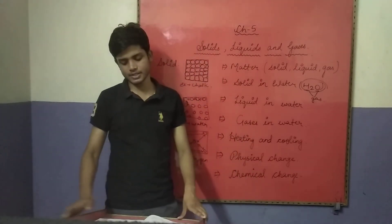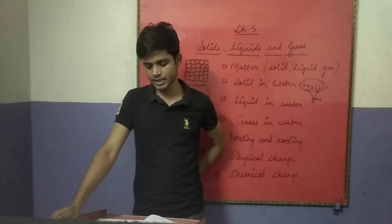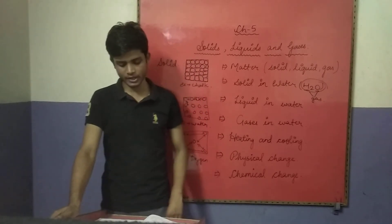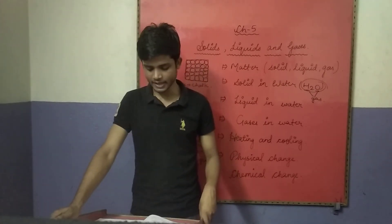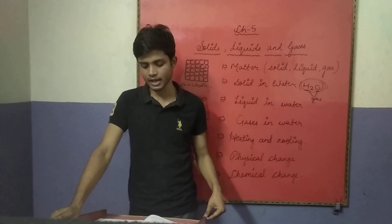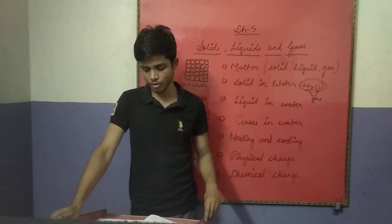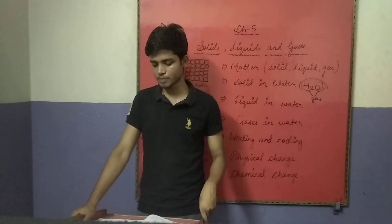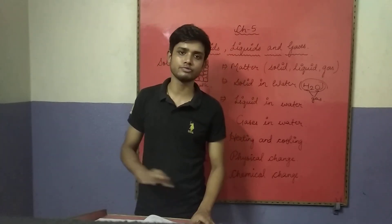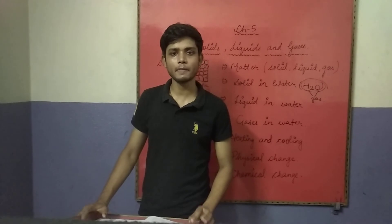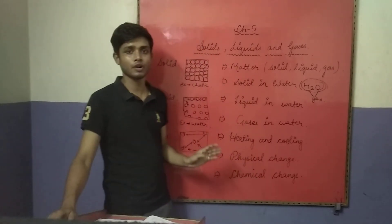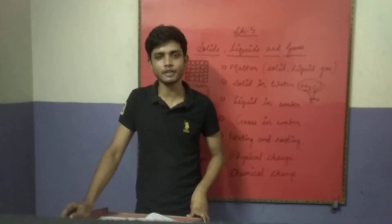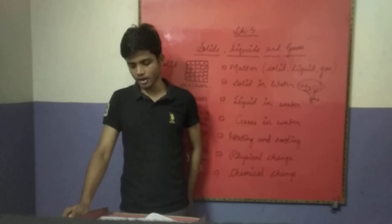Chemical change is a permanent change in matter. Heating and cooling can cause chemical changes that are permanent. For example, burning of a substance is a chemical change — it is a permanent change and is not reversible.